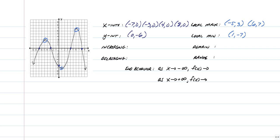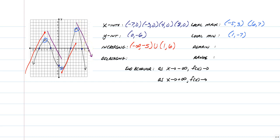So where are we increasing? We're going to increase from here to here, and then increase again from here to here in terms of x values. So we increase from negative infinity until we get to negative five, and then we decrease for a while, but then we go back up again from one to six. For decreasing, we start high and go low twice — we decrease from negative five to positive one, and then we decrease again from positive six until we go to positive infinity, where it's going to continue to decrease forever.